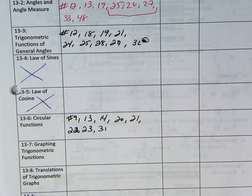All right, so we got 13-6, and the prompts for that are number 9, 13, 14, 20, 21, 22, 23, and 34, 31.